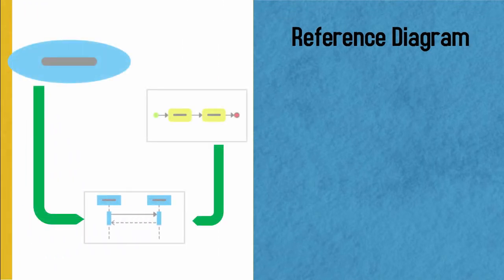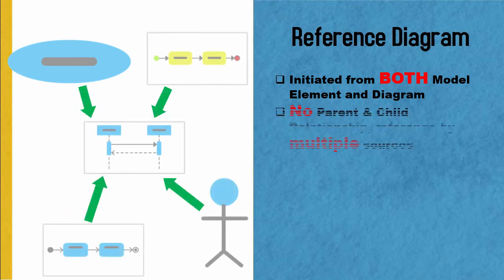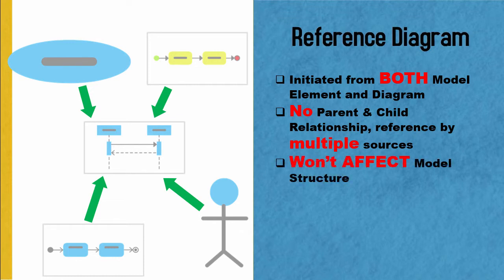In contrast, the reference is only a logical relationship between the source and target model elements. It can be initiated either from a model element or from a diagram. Since it is only a logical relationship, it doesn't involve any parent and child relationship between the source and target. Thus, you can have the same diagram being referenced by multiple sources. As a reference is not a parent and child relationship, the structure of the model element won't be affected even if you create a reference relationship.